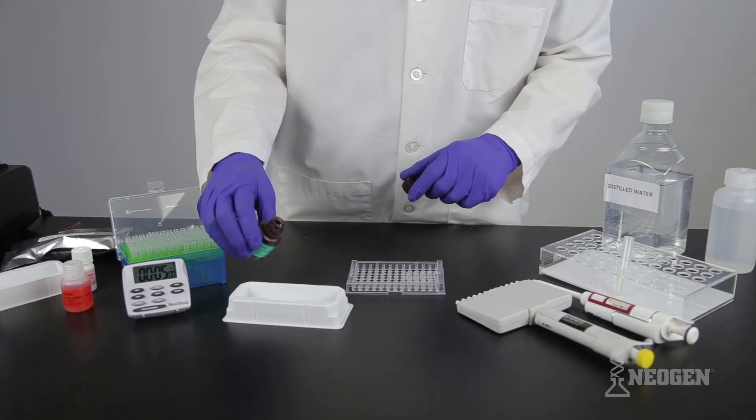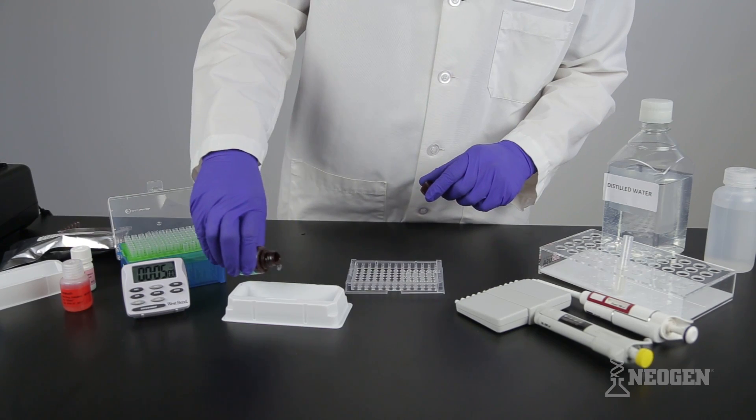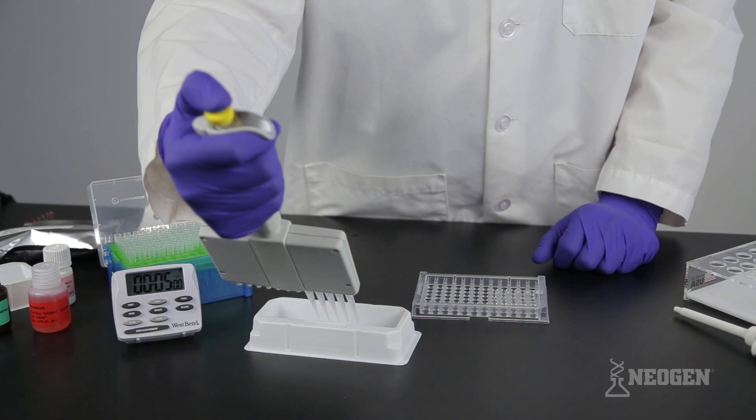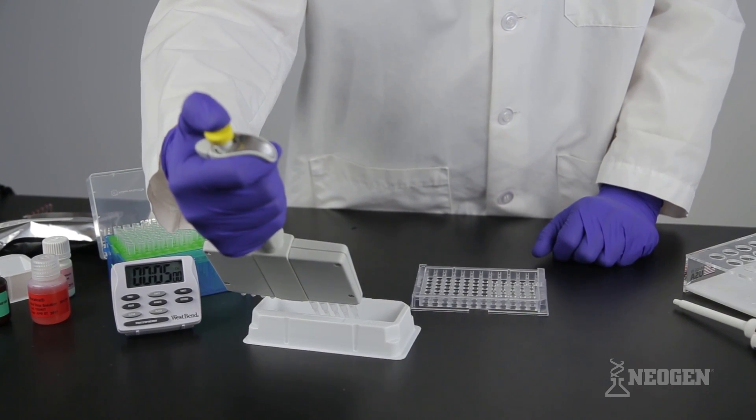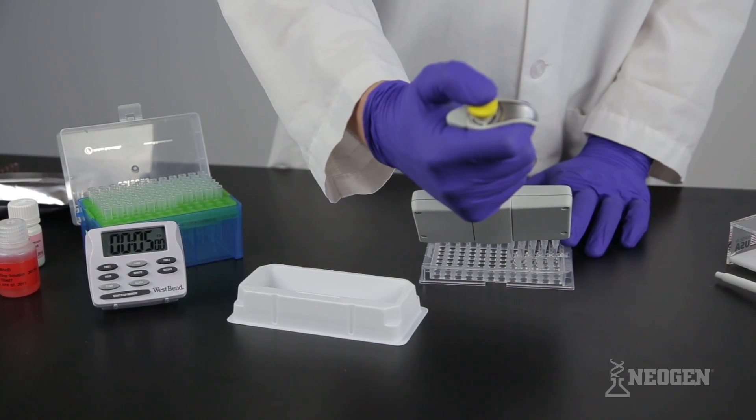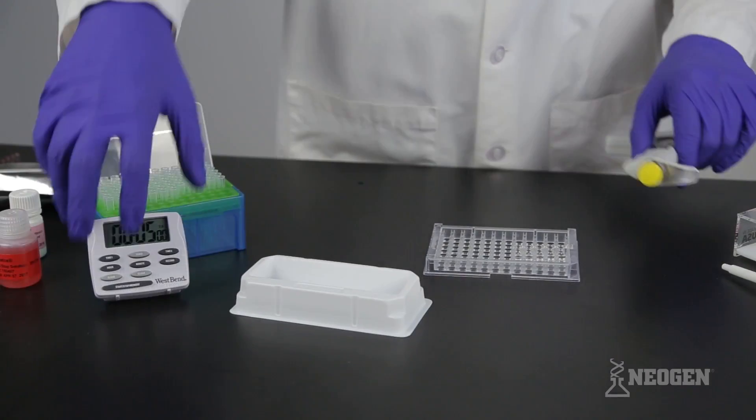Pour the needed volume of substrate from the green labeled bottle into a clean reagent boat. Using new tips on the 12 channel pipetter, prime and pipette 100 microliters of substrate into the clear microwells. Start a timer set for five minutes.